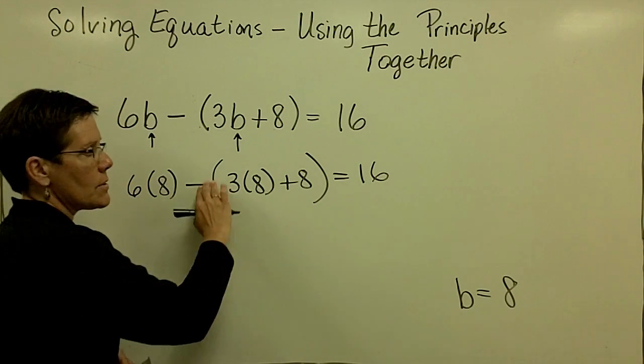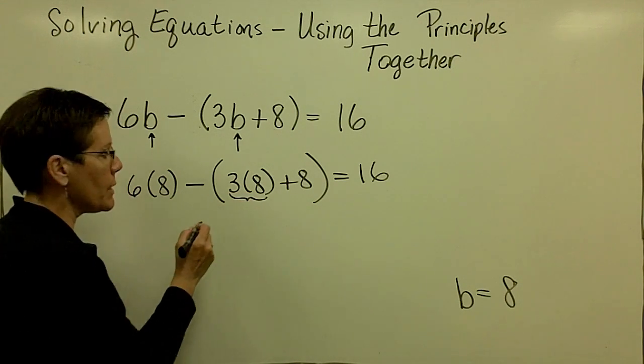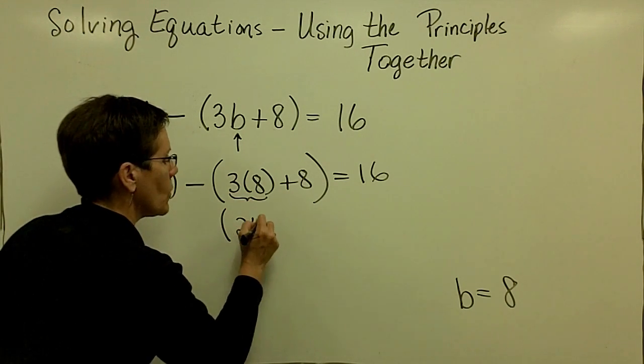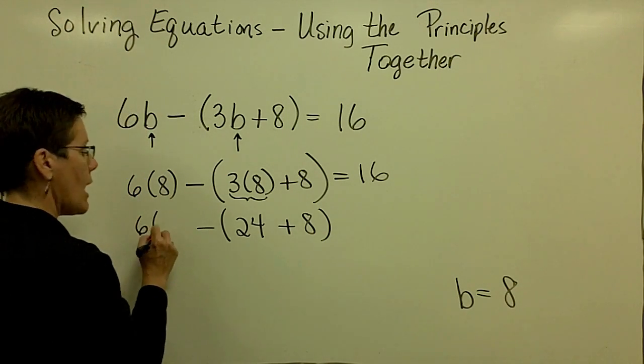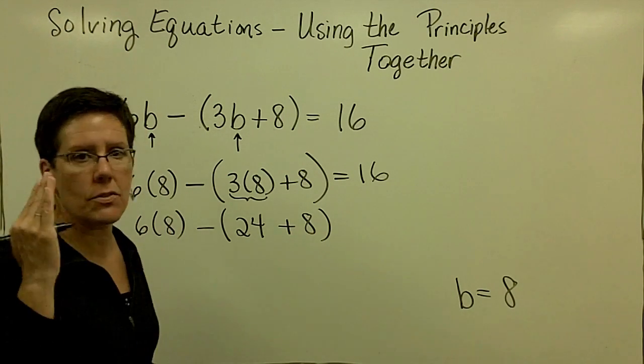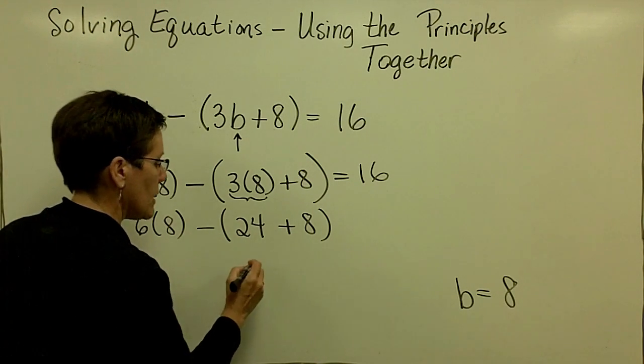So order of operations says do what's in these parentheses. And within those, I need to multiply first. So 24 plus 8 will be 32 here in a minute. I'm really being fastidious here, and I'm just step by step following all the rules. So 24 plus 8 is 32.